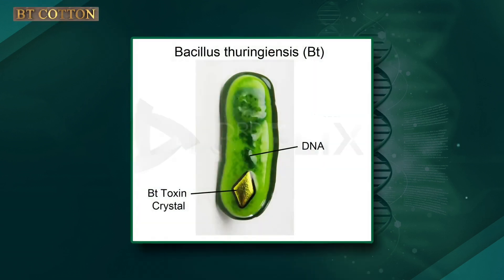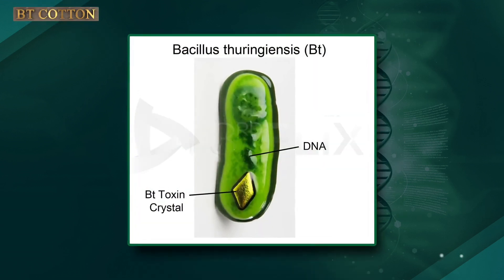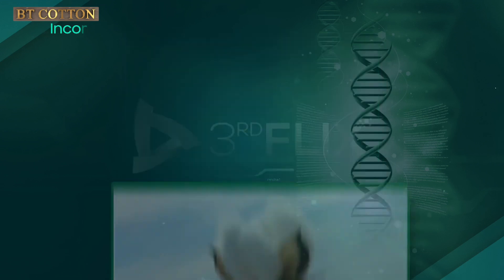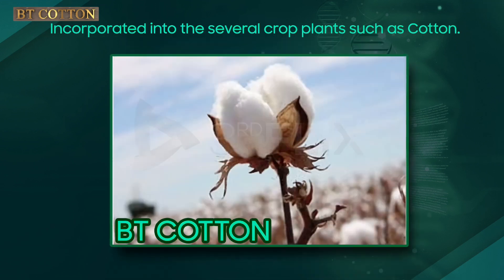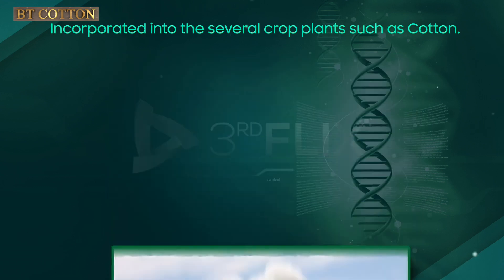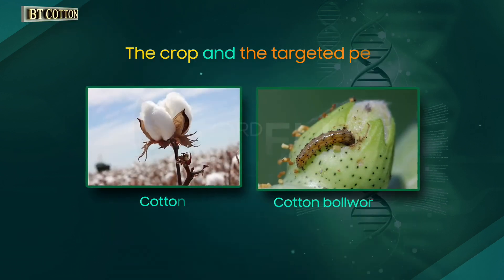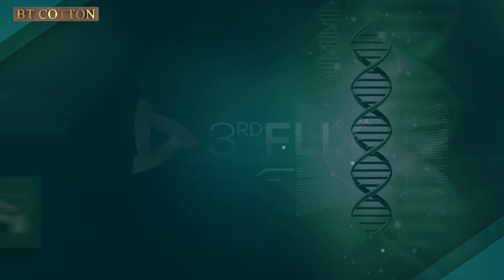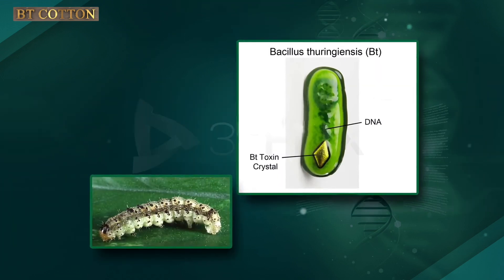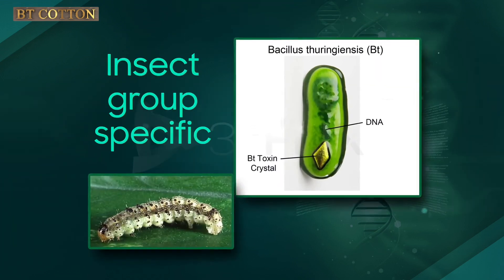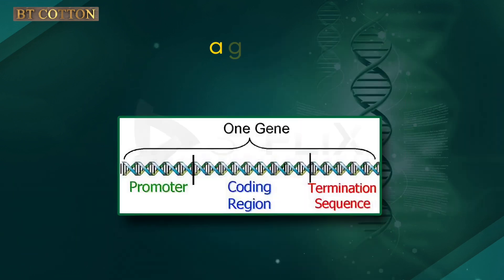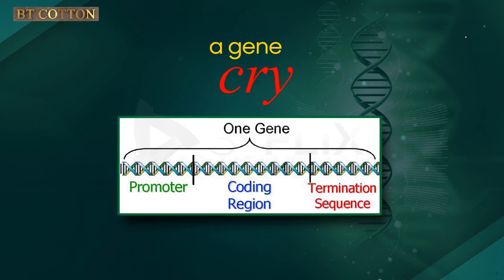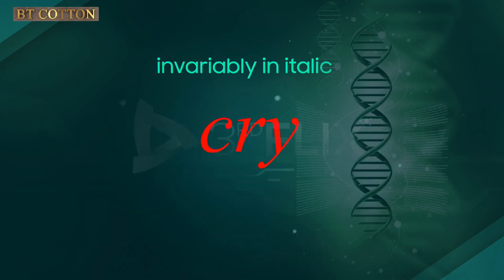Specific BT toxin genes were isolated from Bacillus thuringiensis and incorporated into several crop plants such as cotton. The choice of genes depends upon the crop and the targeted pest, because most BT toxins are insect group specific. The toxin is coded by a gene named CRY. Gene symbols usually have small letters and are invariably written in italics.